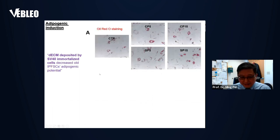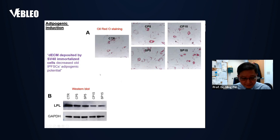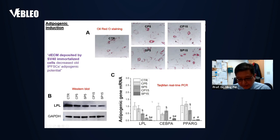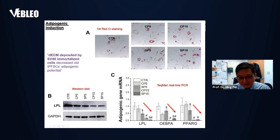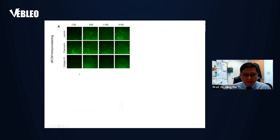For adipogenic induction, Oil Red O staining shows not much difference among groups, but Western blot shows ECM groups have less LPL expression. Real-time PCR studies show ECM-expanded cells have lower adipogenic marker expression. So ECM deposited by SV40 decreases old stem cell adipogenic potential.